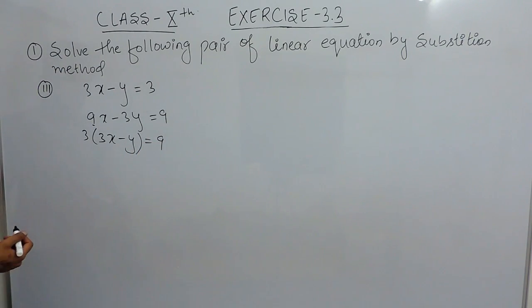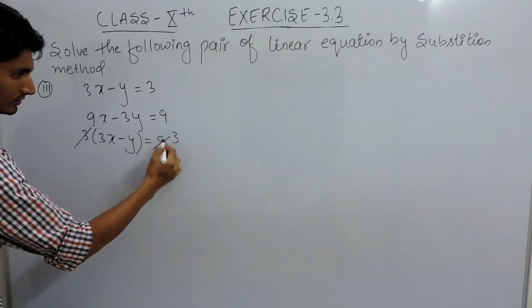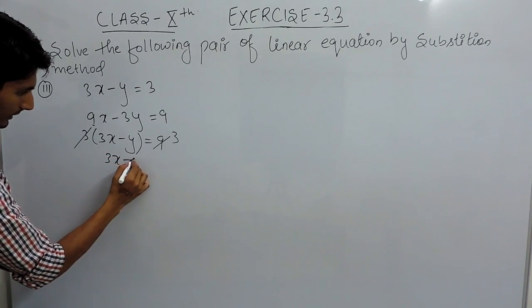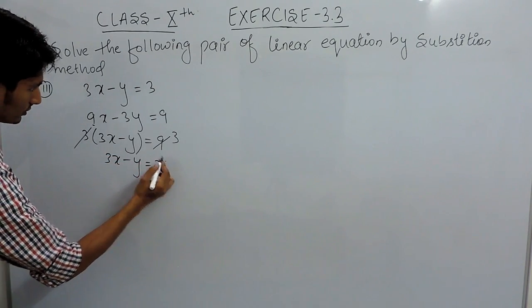This 3 when shifted to that side can cancel 9 three times so the equation becomes 3x minus y equals to 3.